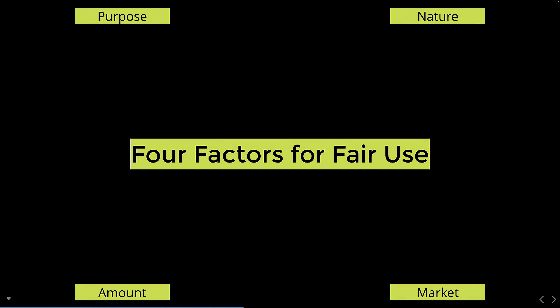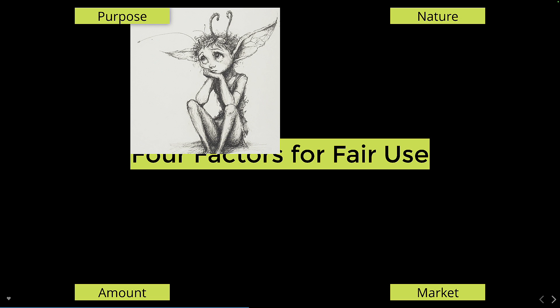For something to be considered fair use, you've got to conform to the four factors of fair use. First, we encounter the 'purposeful Pixie,' a sprightly character who asks, 'Why dost thou use this work, mortal?' This factor cares about transformation and education. If your use brings new life or knowledge into the world, the Pixie may bless your endeavor. But commercial pursuits may sour its mood.